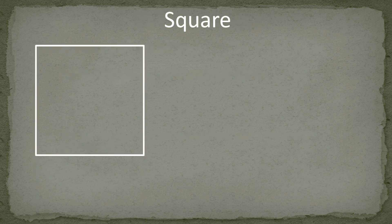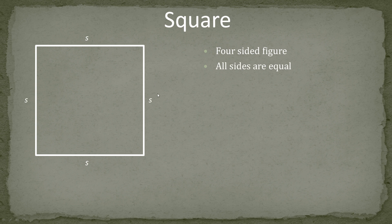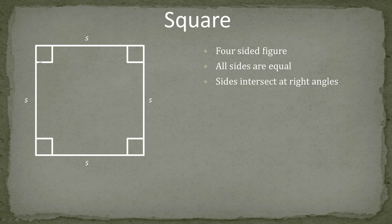The first figure we're going to look at is the square. The square has four sides. All of the sides are equal, and I let S represent the length of the side — all sides here are length S. And all of the sides intersect at right angles. This is important because there is a figure that has four equal sides that don't intersect at right angles — that's called a rhombus, and we will look at that later in geometry.